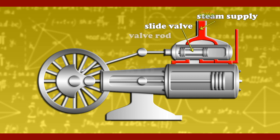Valve rod and valve stem: this part is connected to the piston. Cross knot: it is the link between the piston rod and the connecting rod. It guides the motion of the piston rod and prevents it from bending.